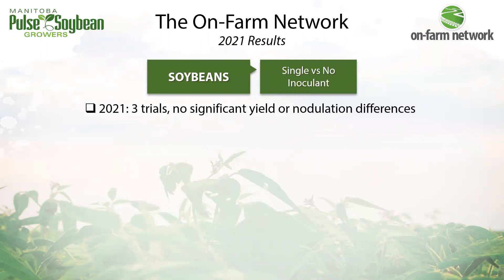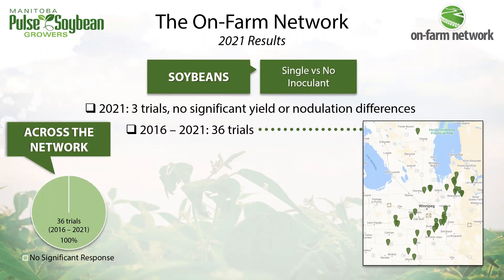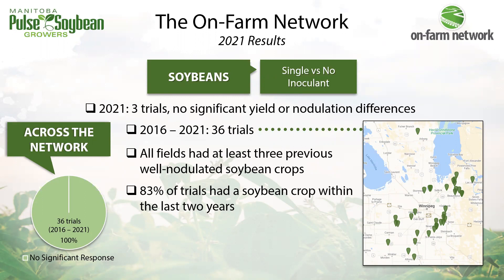We also had three single versus no inoculant trials, each with a different treatment — liquid and peat versus none, liquid versus ECot versus none, and liquid versus none. There were no nodulation or yield differences among treatments. Across the network, 36 trials since 2016 comparing seed-applied inoculant to bare seed have shown no significant yield response yet. These trials have been in south central Manitoba where there is quite a bit of soybean history. At 83% of fields, soybeans had been grown within the last two years — this tight rotation might mean we can come back on inoculant, but it could also set us up for disease and resistant weed problems.